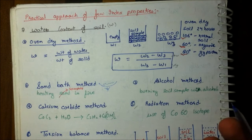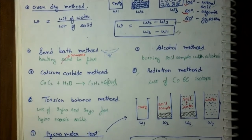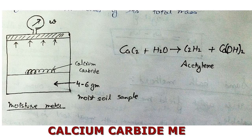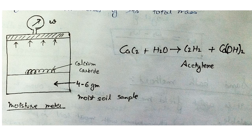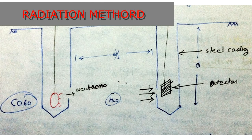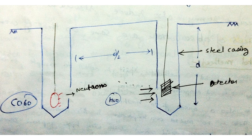Alcohol is used in this method because alcohol mixes easily with water, unlike kerosene. The next method is the calcium carbide method — a chemical approach where calcium carbide is added to the soil. The reaction with soil water produces C₂H₂ (acetylene) and calcium hydroxide, converting all the soil water into a measurable form. The radiation method uses two steel pipes — on one side a C-6 isotope is placed in the soil, and on the other side a recorder reads the radiation, which indicates the soil's water content.